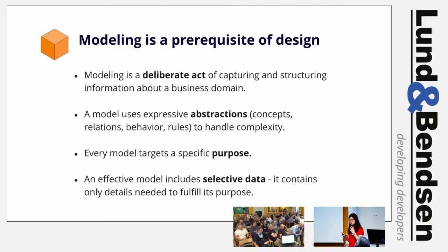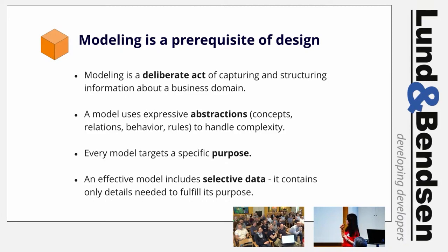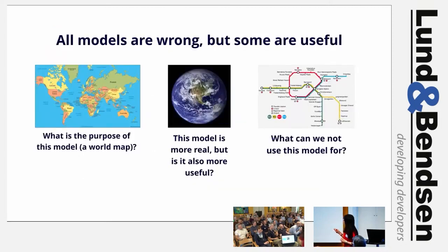A lot of people think about abstractions as something to simplify complexity. But calling it a cube doesn't make the reality simpler or more complex — abstraction, in my eyes, is not actually simplifying reality, but making it easier to communicate about that complexity. Hence the famous quote from statistician George Box: 'All models are wrong, but some are useful.'